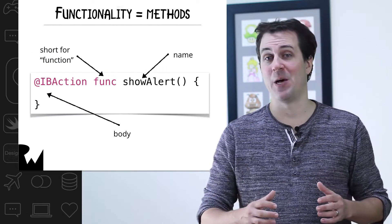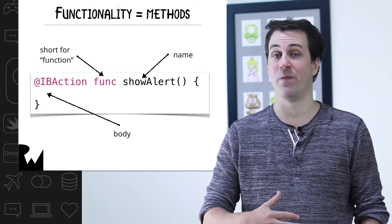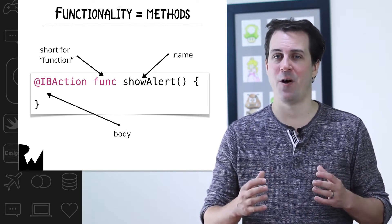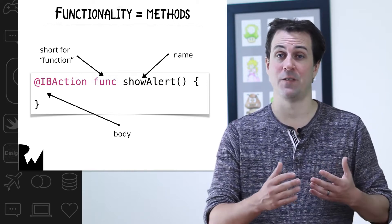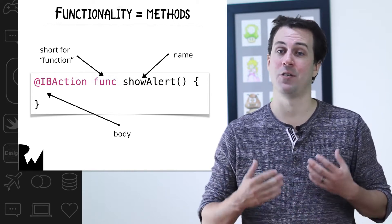The thing that provides functionality to an object is known as a method. Now if you've worked with other programming languages in the past, you may have heard this referred to as function or subroutine. Swift also uses the term function. In fact, the keyword says func. The difference is a method is a function that belongs to an object.